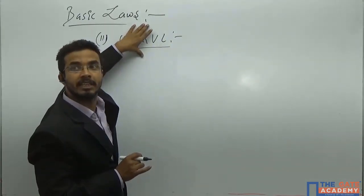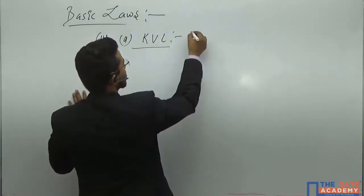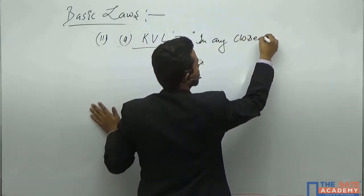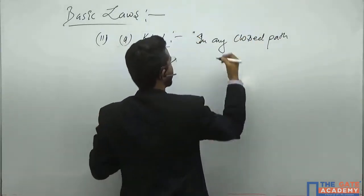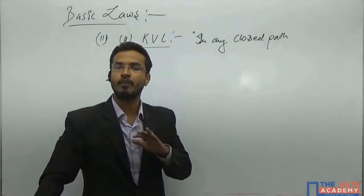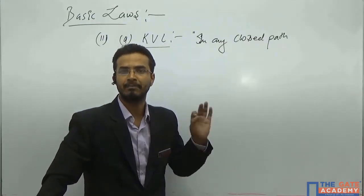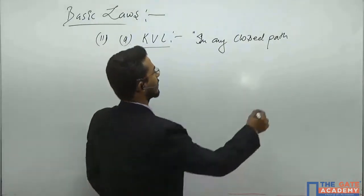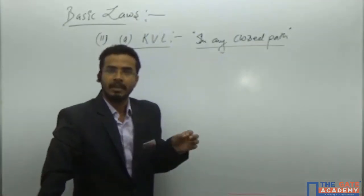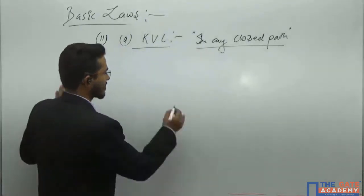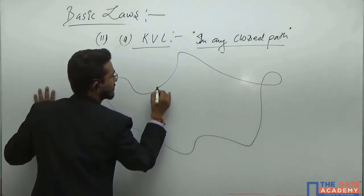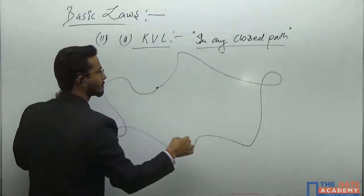The condition for KVL is: in any closed path, the algebraic sum of all the voltage drops must have to be zero. In any closed path, the starting point and the ending point are the same — that means if you are starting from a point, traveling somewhere, and again coming back to the same point, you are making a closed path.